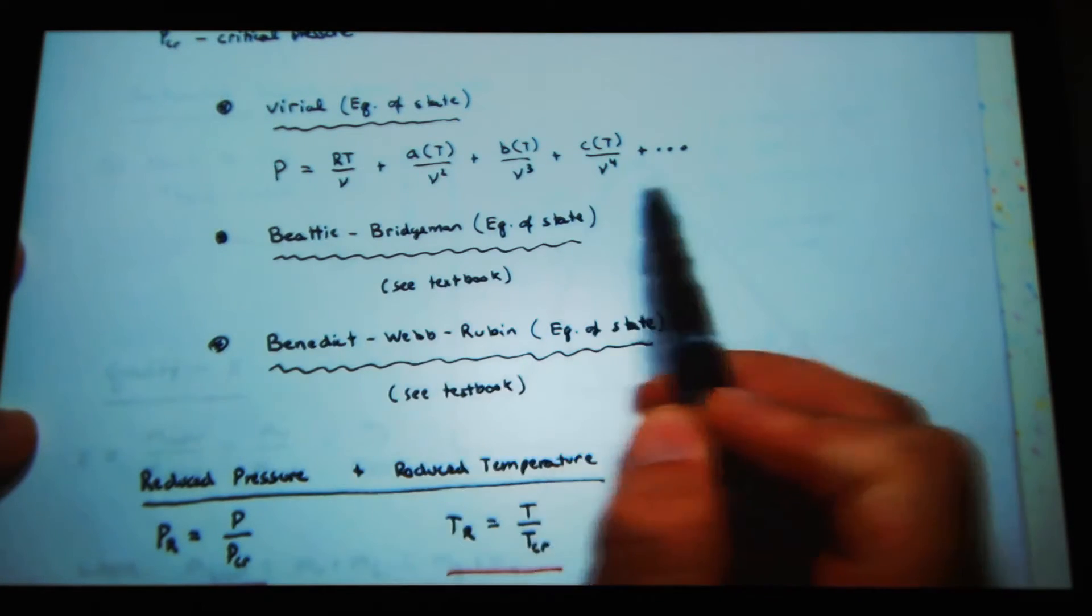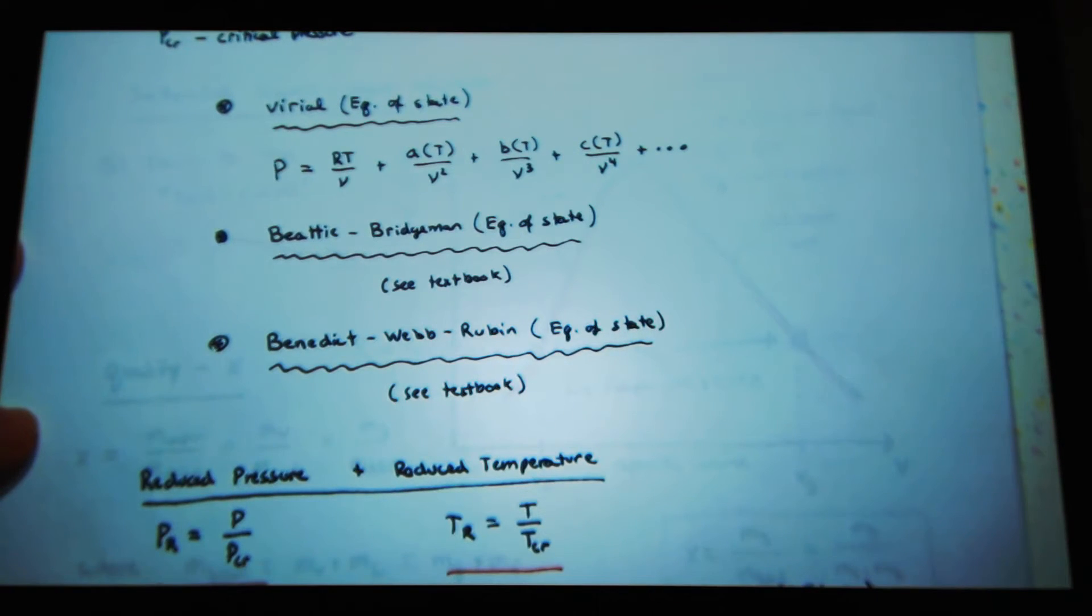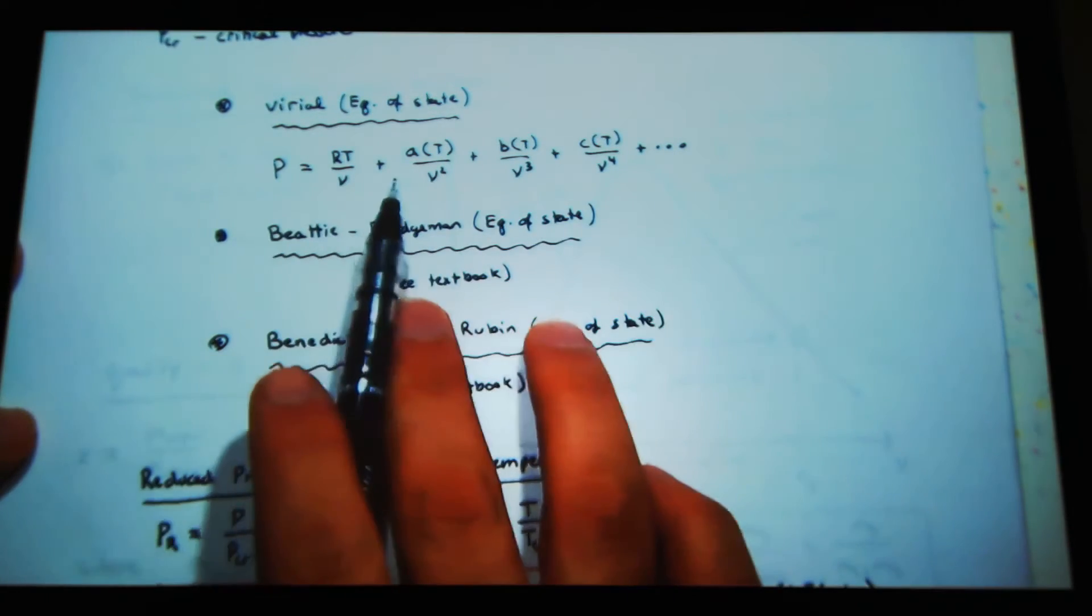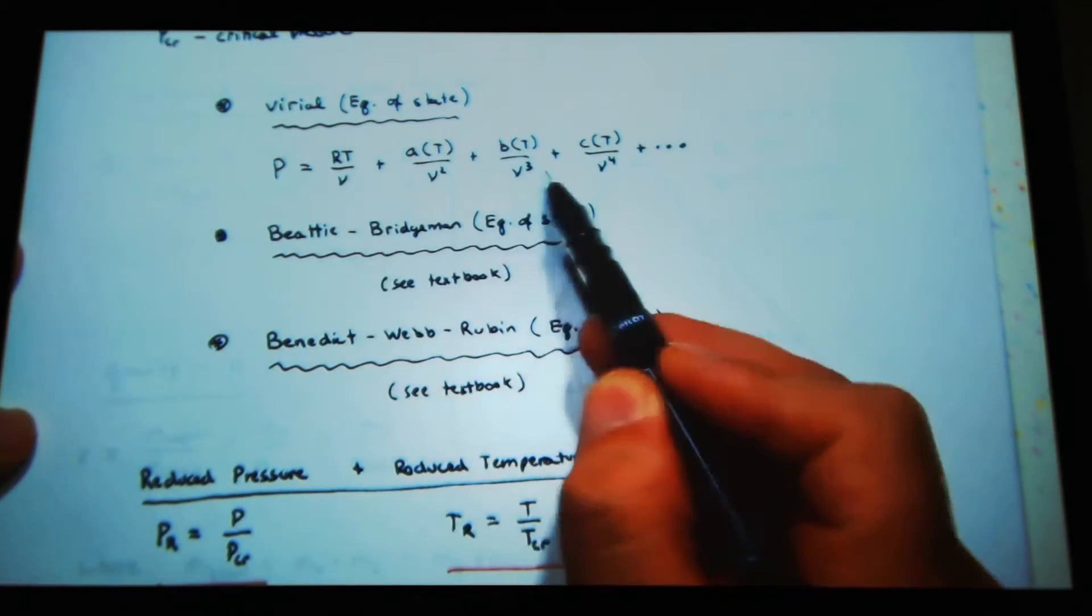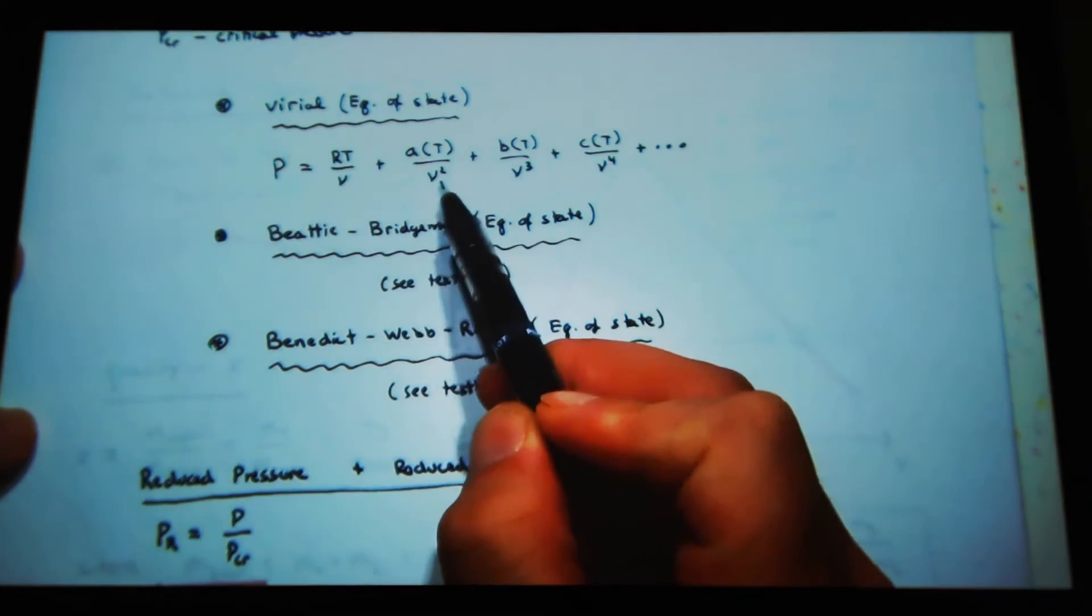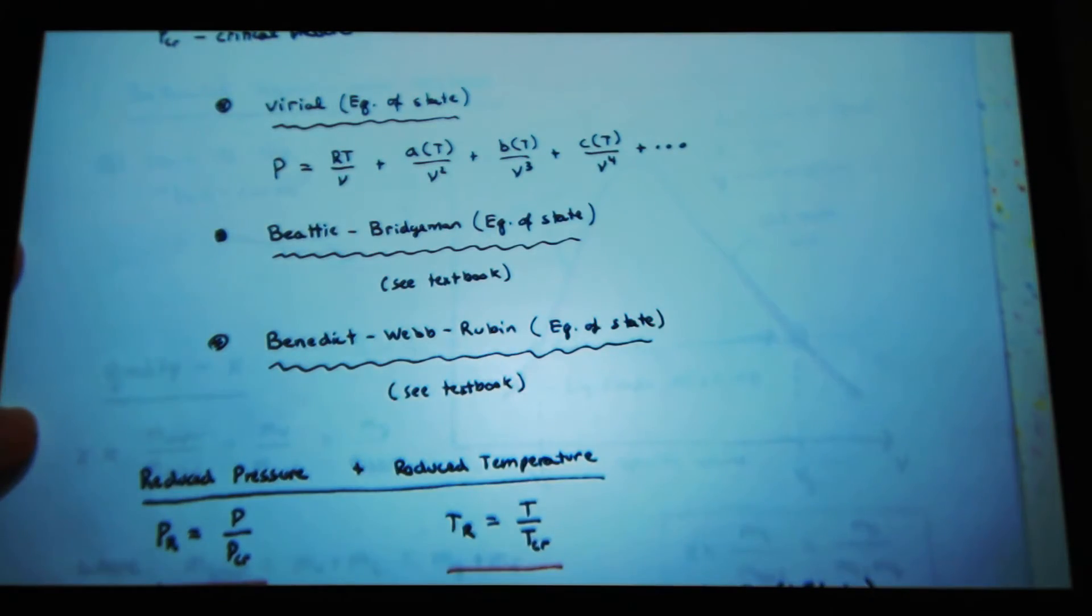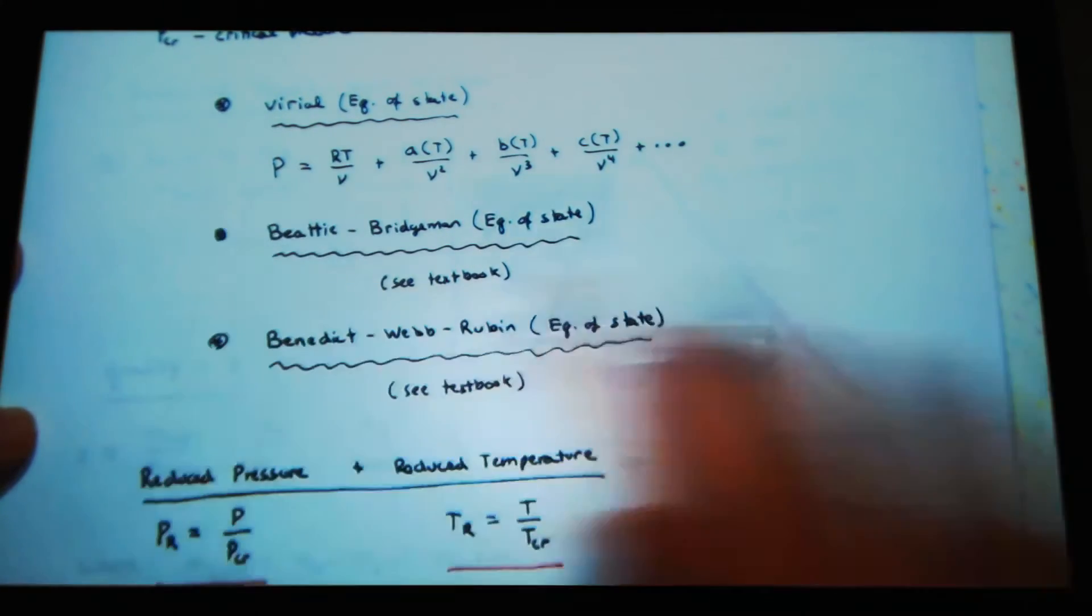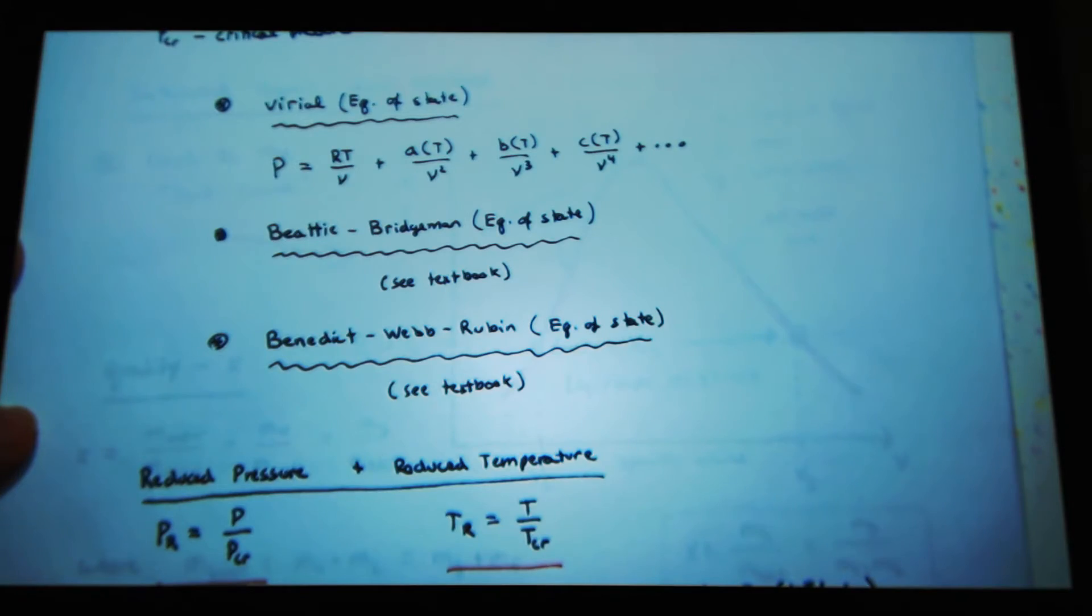So there's a lot of other equations of state. Here's the virial equation of state. So what does this one look like? This one looks like a Taylor series expansion. In principle, we can describe any property by an infinite sum of sines and cosines. So the sine part are all the odd components, and then I have the even square to the even power. This is just Taylor series expansion.